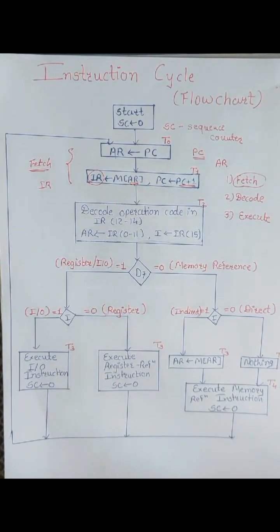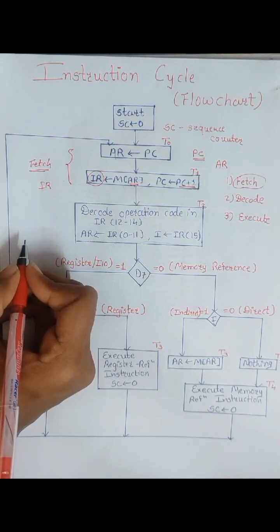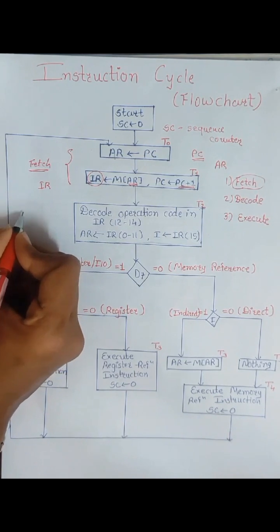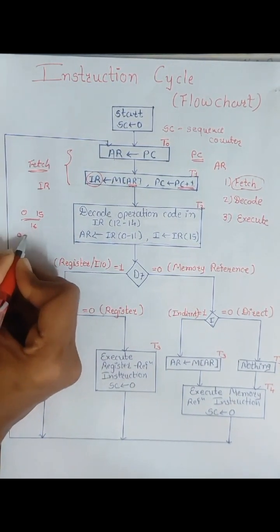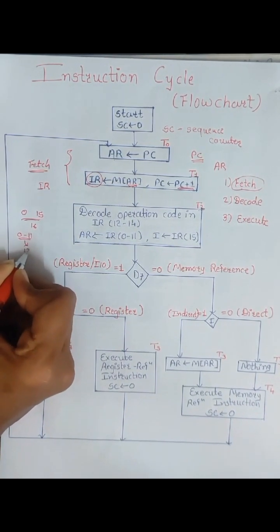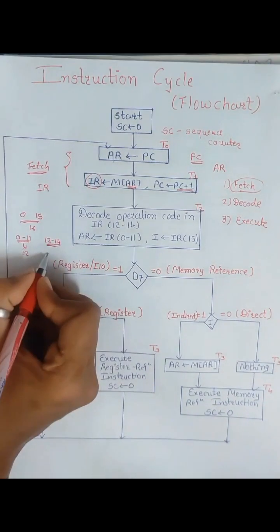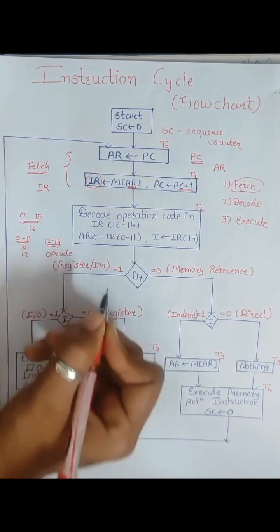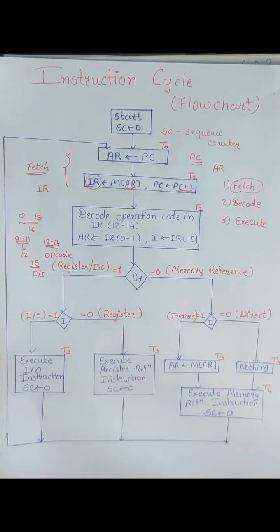So fetch is completed. Once the fetch is done, next I need to decode that particular instruction. At T2 timing signal, I'm decoding the entire instruction from the instruction register. As you are aware, the instruction register is holding that instruction in a 16-bit format, bits 0 to 15. So we have 16 bits of instruction — bits 0 to 11 give us the 12-bit address, and bits 12 to 14 hold the opcode.